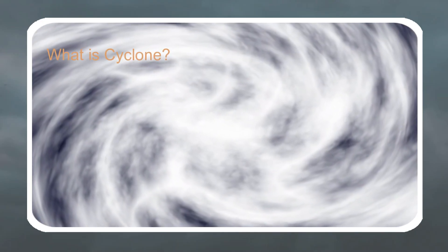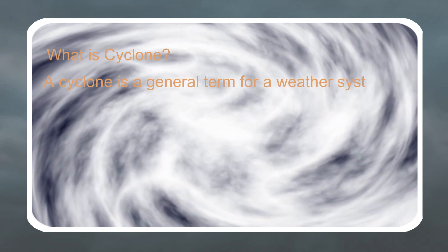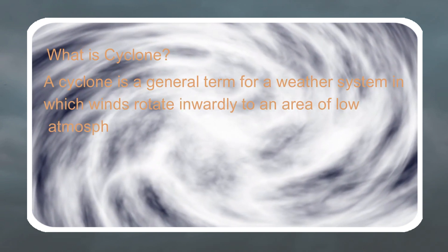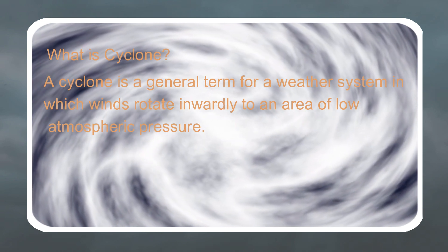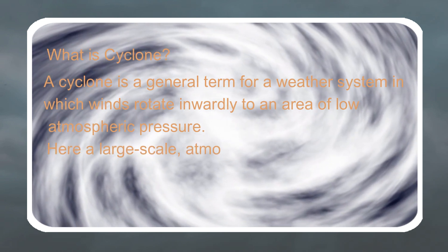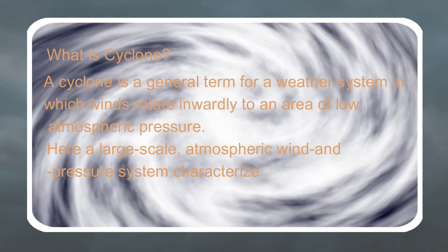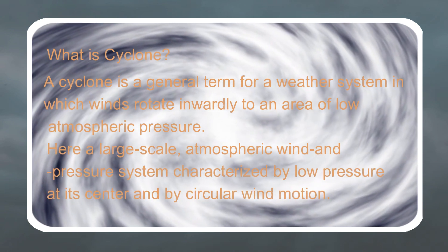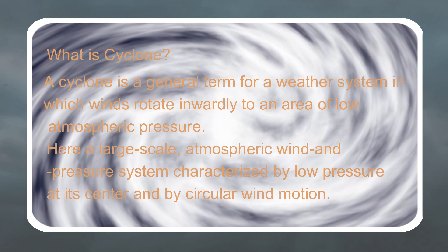So first question, what is cyclone? A cyclone is a general term for a weather system in which wind rotates inwardly to an area of low atmospheric pressure. It is a large scale atmospheric wind and pressure system characterized by low pressure at its center and by circular wind motion.